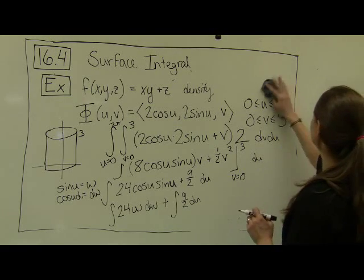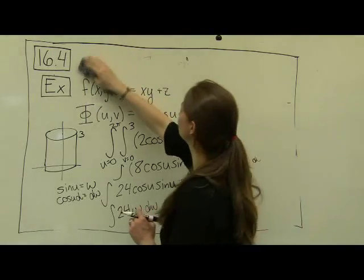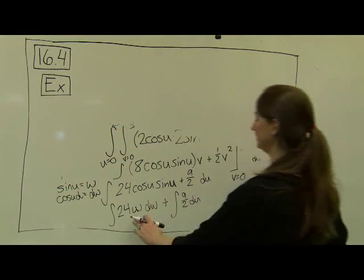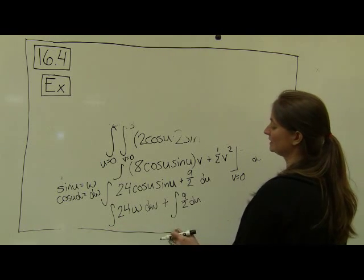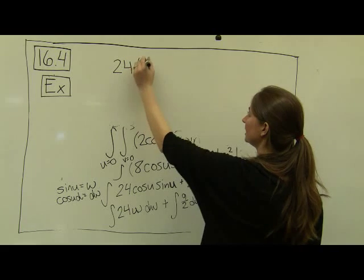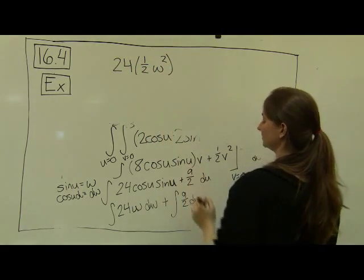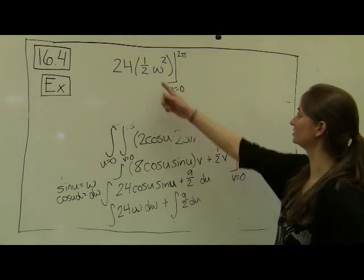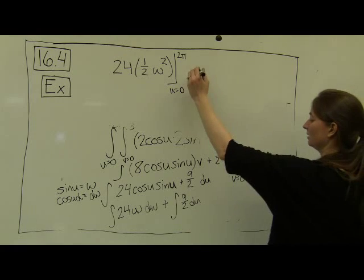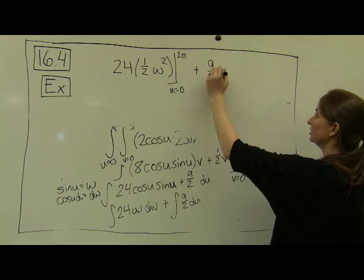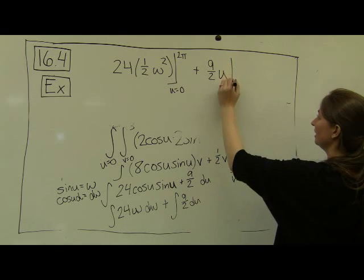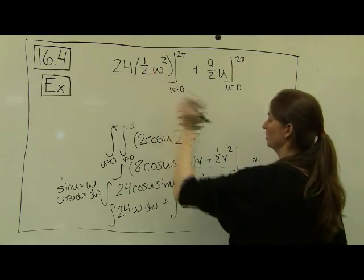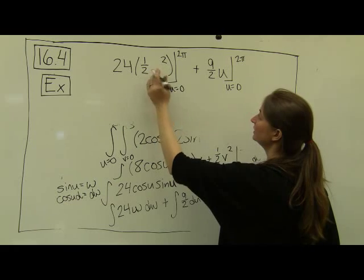And when I integrate it, I'm going to start back up top because I've totally run out of room at the bottom. And so starting up top, I see that when I integrate this with respect to w, I'm going to get 24 times 1 half w squared, evaluated from where u was equal to 0 to 2 pi. So I need to change those back so that those are u's. Plus 9 halves u. I'm integrating this term with respect to u, evaluated as u goes from 0 to 2 pi. So when I substitute u back in, recall our w was equal to sine of u.